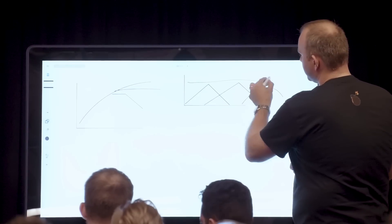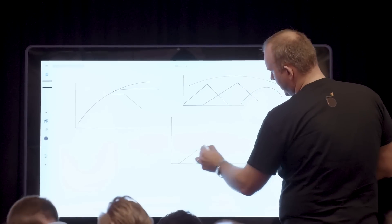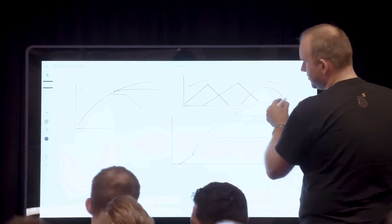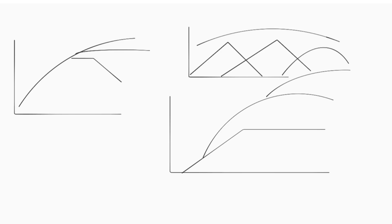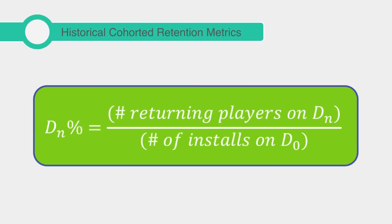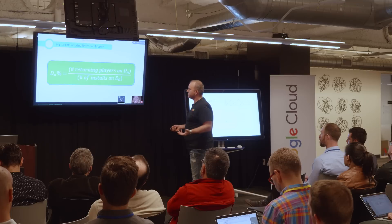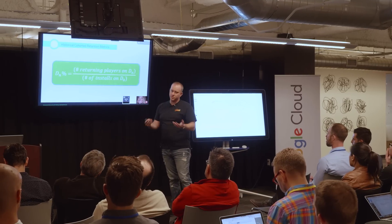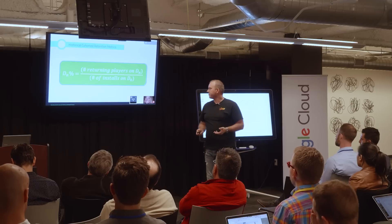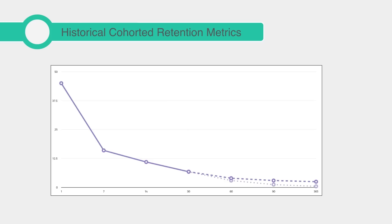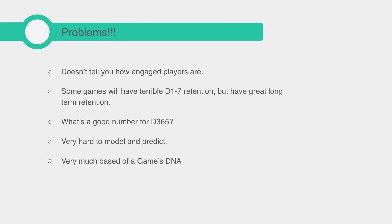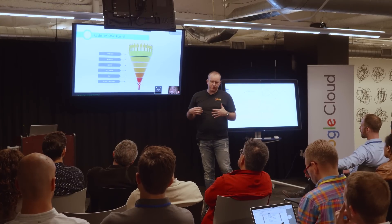What you really want is to launch one game, it grows, the next game grows on top of it, and you get this stacking effect. To do that you need to understand long-term retention. Most people fall into cohort-based retention — everyone installs on D0, comes back on D1, and so on — but you can't really extrapolate these graphs well. It's hard to know where it'll fall off or what a good Day 365 number looks like.